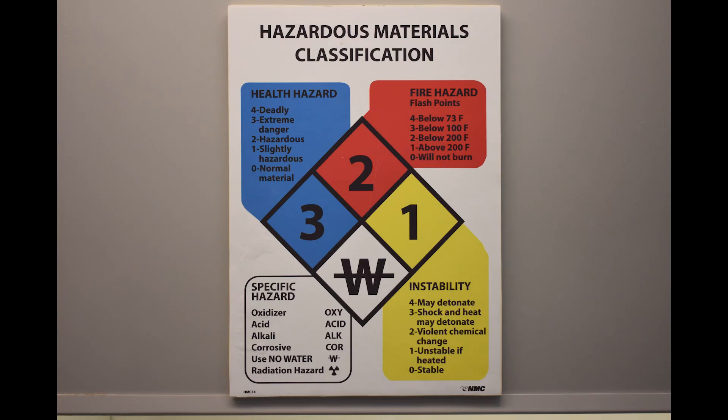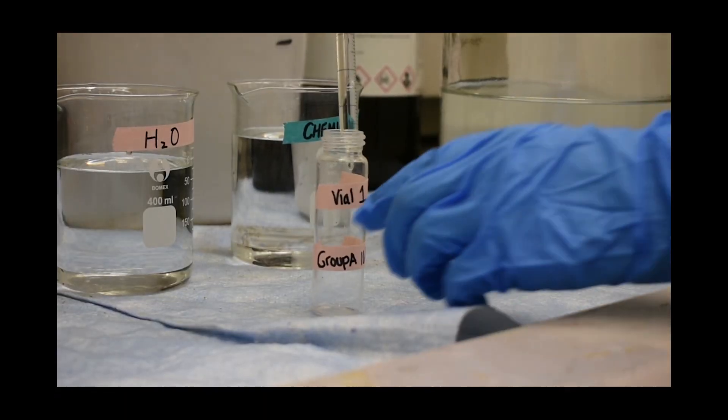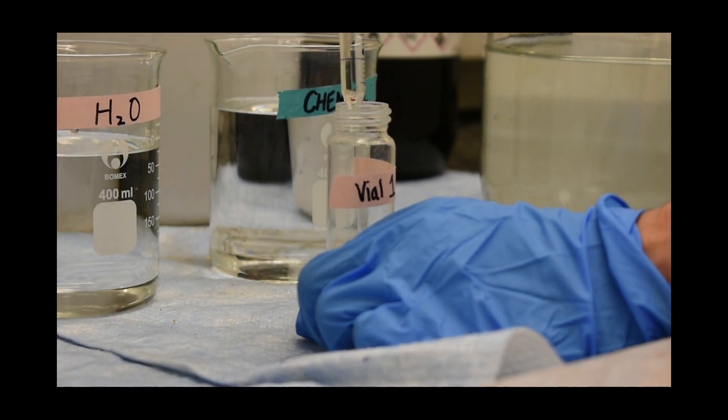When preparing solutions in the laboratory, it is important to review the MSDS sheets for the chemicals being used in the experiment. Proper PPE, especially gloves, should be worn when handling chemicals in the lab. The solution must be prepared under a fume hood at all times.